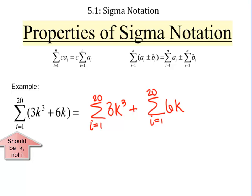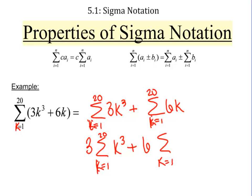Then what? Pull those constants out. So 3 times the sum i goes from 1 to 20 of k cubed plus 6 times k goes from 1 to 20 of k.